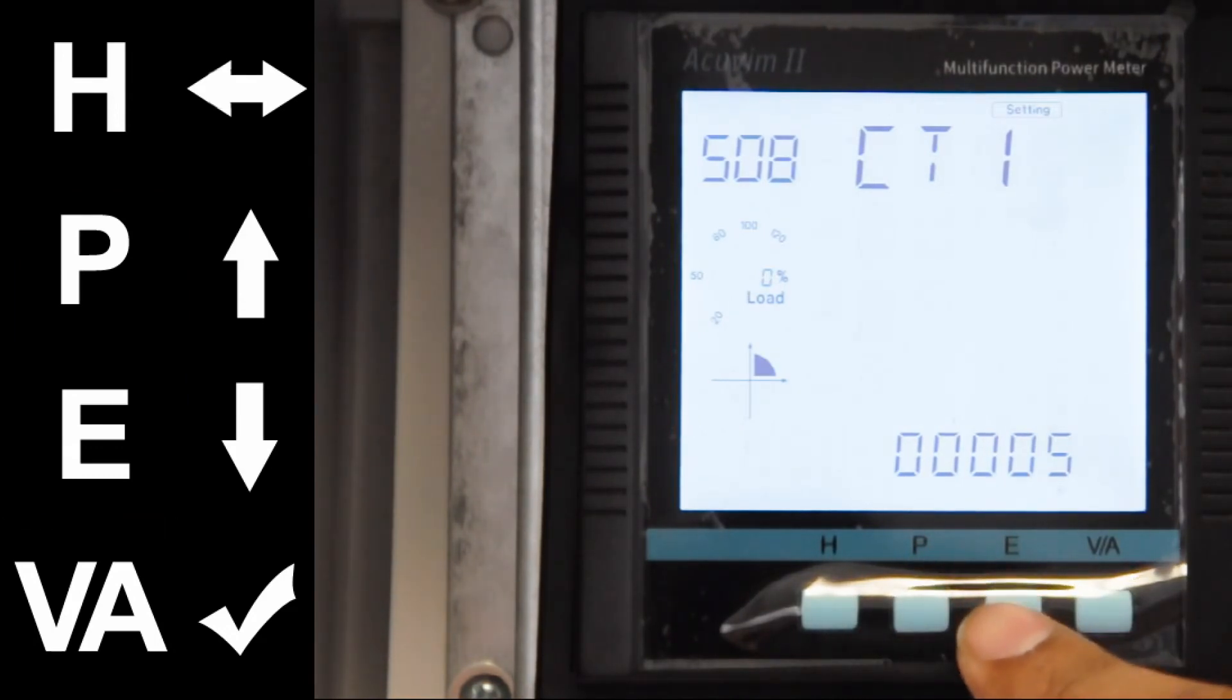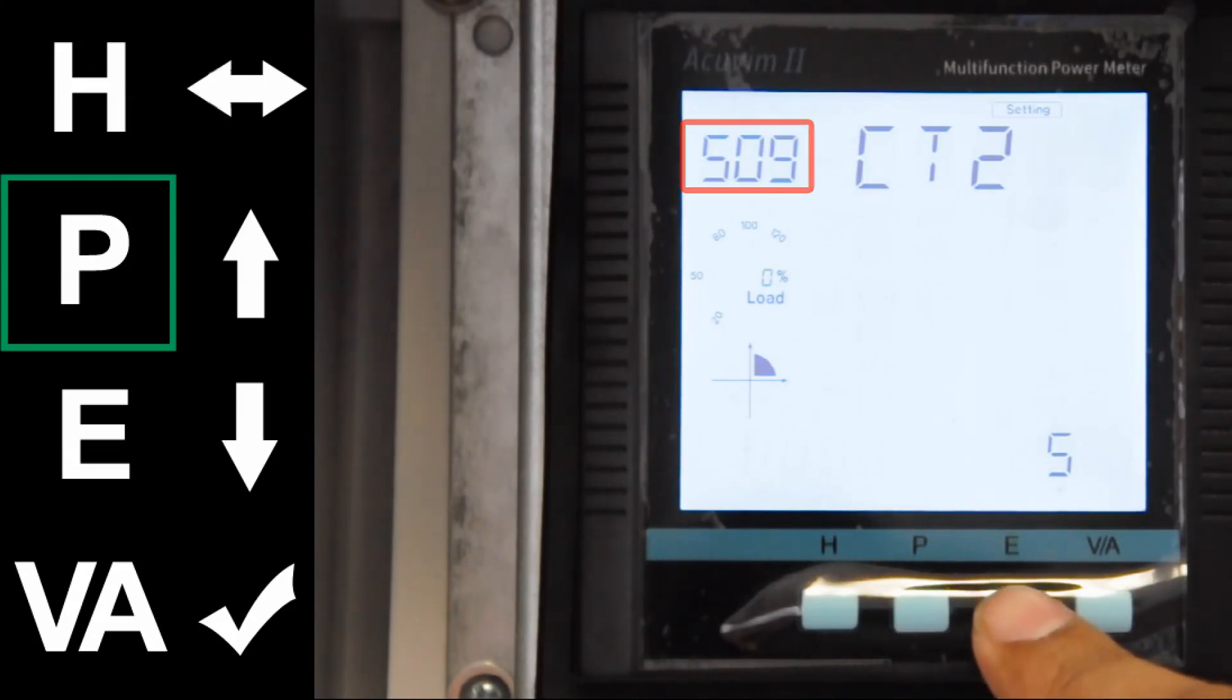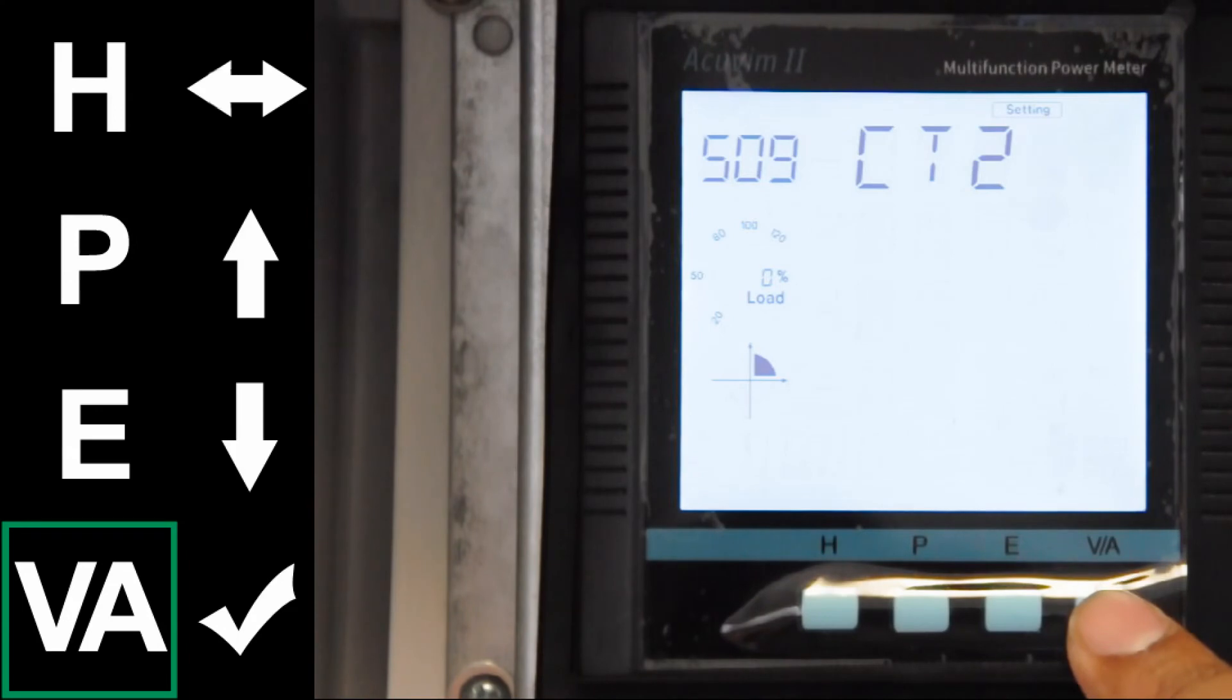You will now set up your second CT ratio. To go to the second CT ratio, go to S09. S09 is now CT2. Press VA to enter into the session.